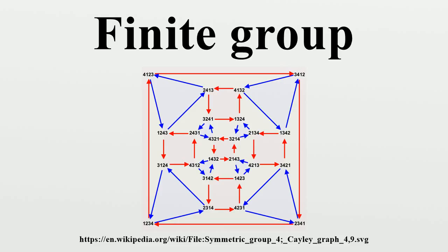Groups of Lie type. A group of Lie type is a group closely related to the group G of rational points of a reductive linear algebraic group G with values in the field K. Finite groups of Lie type give the bulk of non-abelian finite simple groups.